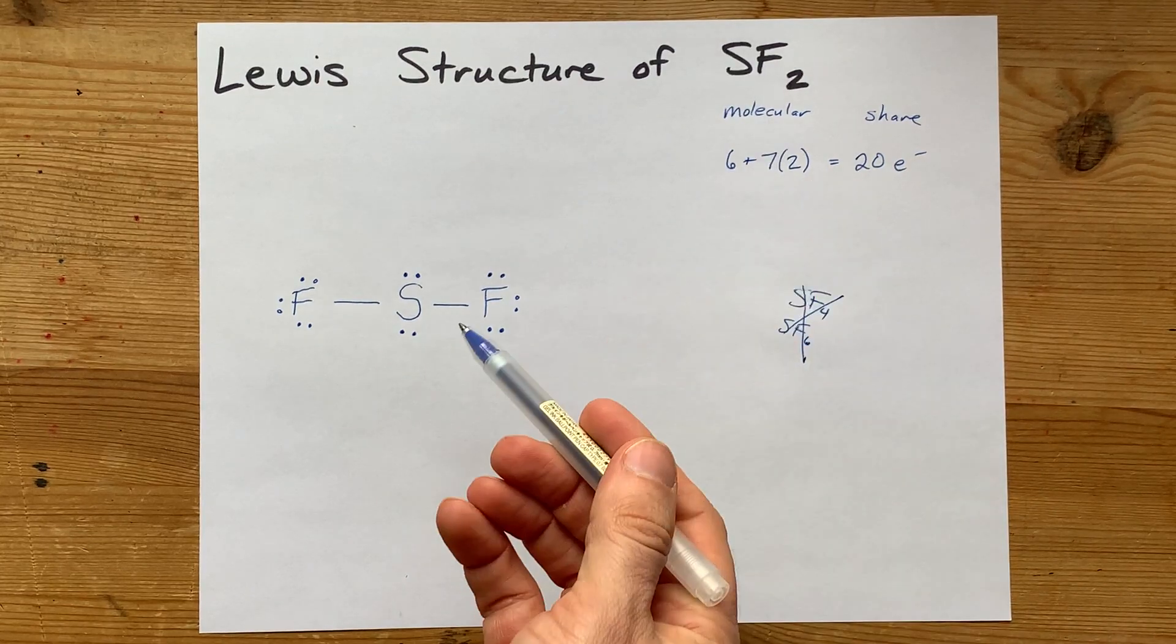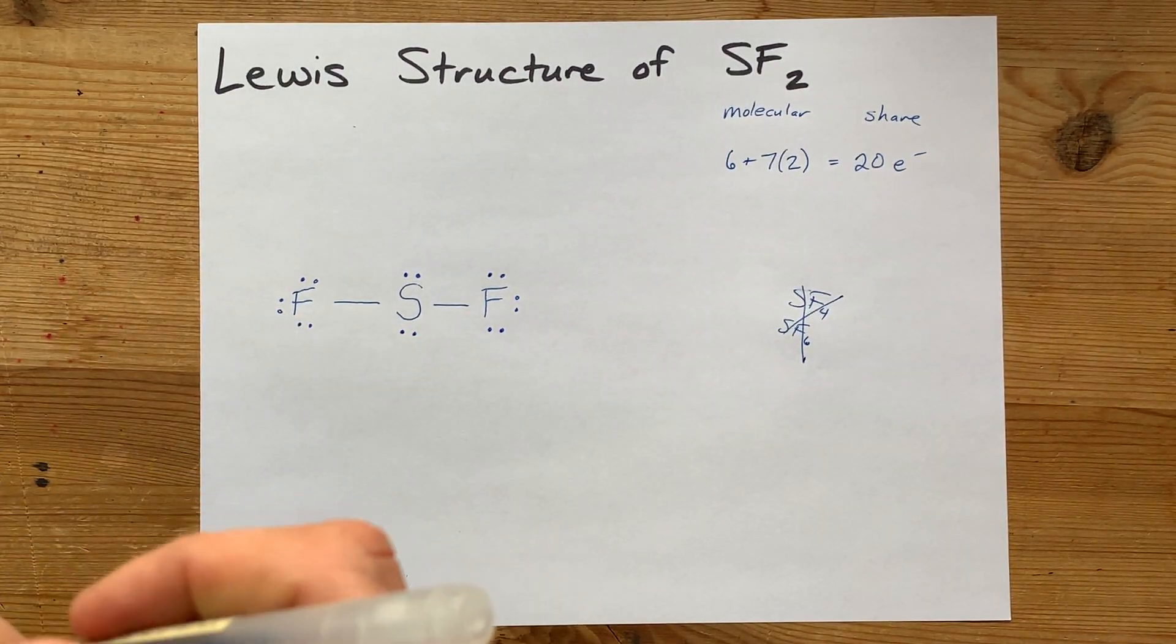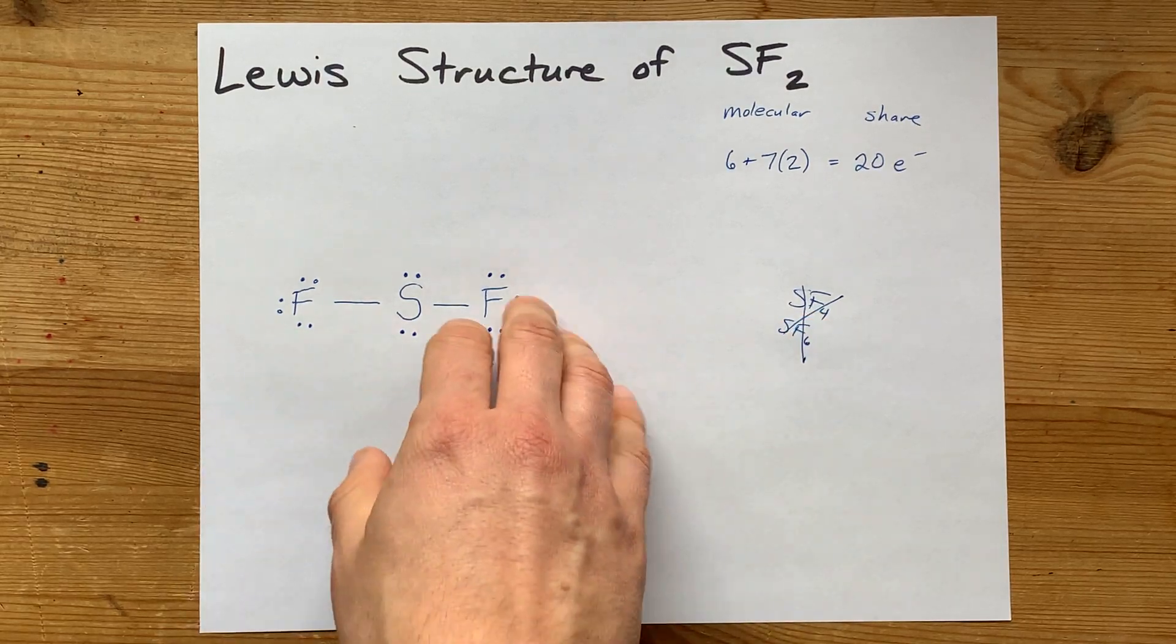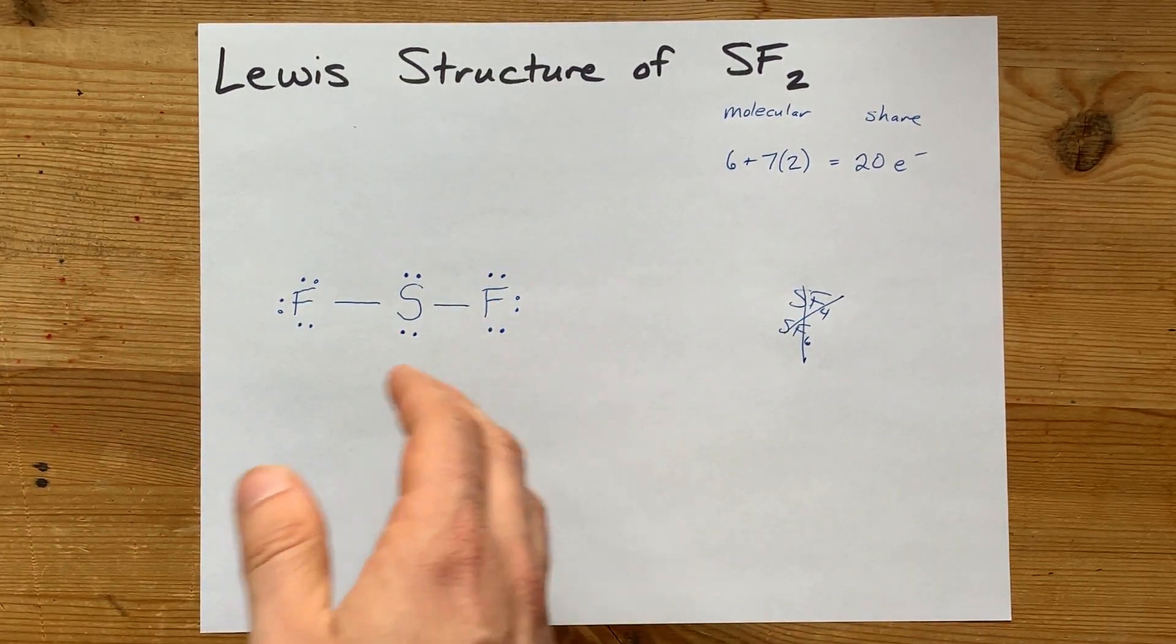This is the Lewis structure for SF2. Full octet on all the atoms. You can't do anything to make the atoms happier than that. Congratulations, you did it, and best of luck.